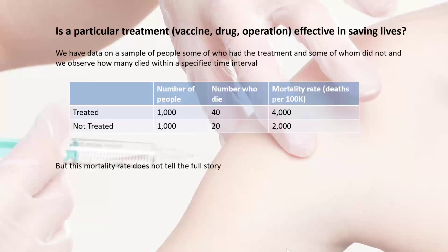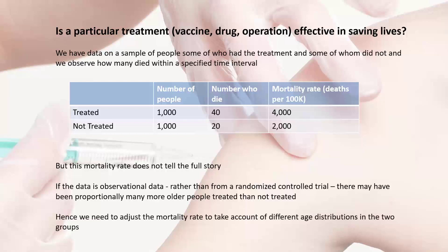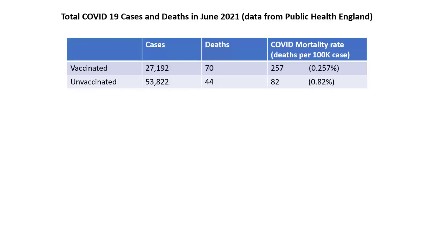But this mortality rate doesn't tell the full story. More often than not, the data will be from an observational study rather than a randomized controlled trial, which means there may have been proportionally many more older people treated than not treated. We get similar confounding problems in randomized controlled trials also, so we need to adjust the mortality rates in each group to account for different age distributions.